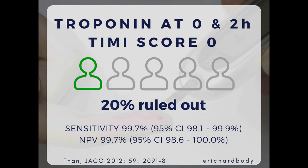There are several risk scores out there. The first is the TIMI risk score, which was developed to risk stratify patients with confirmed ACS but has been used in the ED to identify low-risk patients. Martin Thann and his group in Australasia found that with a low TIMI risk score of zero and normal troponin on arrival and two hours later, 20% of patients could go home — with 99.7% sensitivity and negative predictive value. So it's a good strategy helping us to rule out, requiring two tests two hours apart.